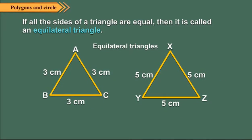If all the sides of a triangle are equal, then it is called an equilateral triangle. Here, in triangle ABC, AB is equal to BC is equal to AC. Also in triangle XYZ, XY is equal to YZ is equal to ZX. So ABC as well as XYZ are equilateral triangles.